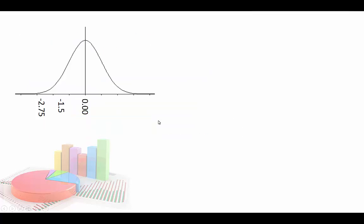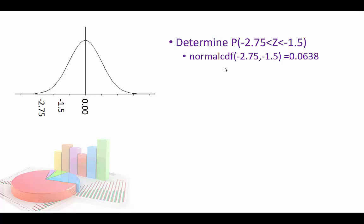We'll do a couple more plain z-score problems without word problems. If I asked you to determine the probability or the percent that's between negative 2.75 and 1.5, that's this green area. On the calculator it's super easy — it would just be normalcdf(negative 2.75, 1.5) and it calculates it for you.